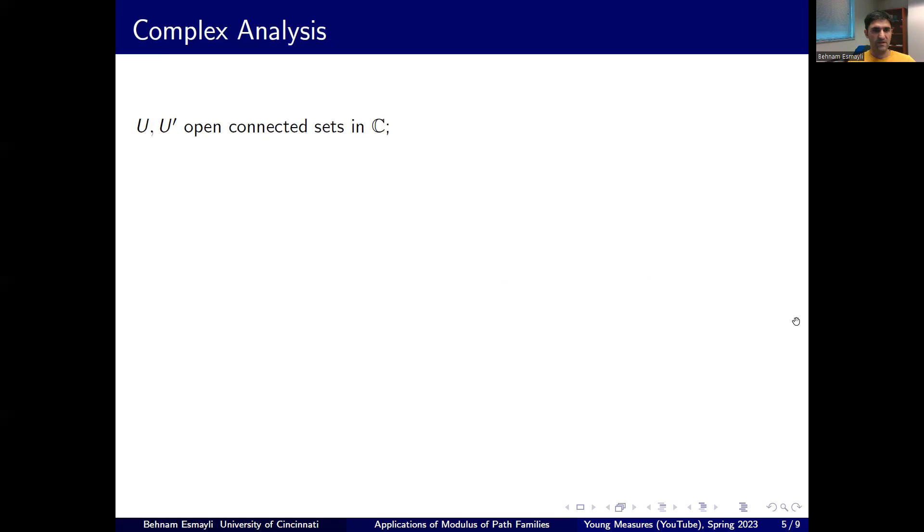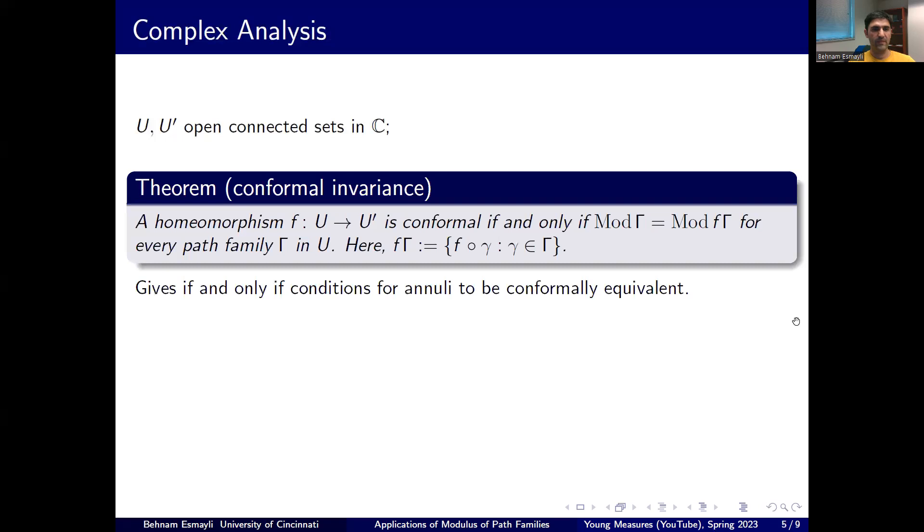So it was observed that if you have two open domains in complex plane, and if you have a conformal map, a holomorphic injective function from u to u prime, then any path family that you take in the domain will have the same modulus as its image family in the target. And by image family, F gamma, we mean you take a gamma in the domain and you compose it with F. Because F is C infinity function, in particular Lipschitz, any rectifiable curve will map to rectifiable curve.